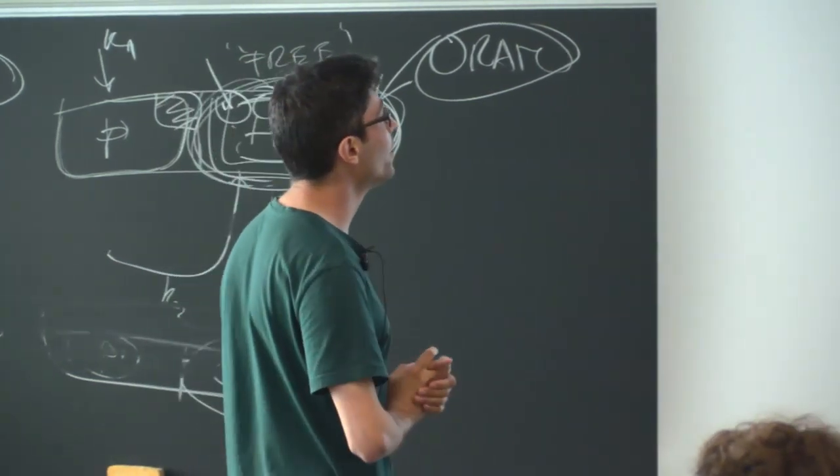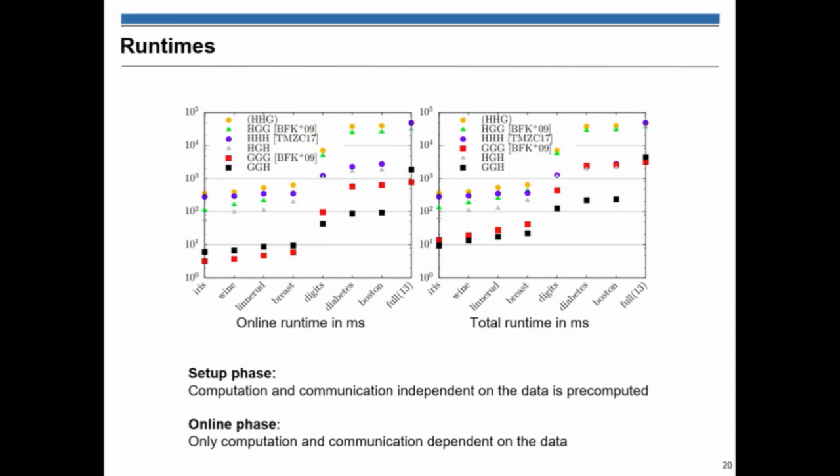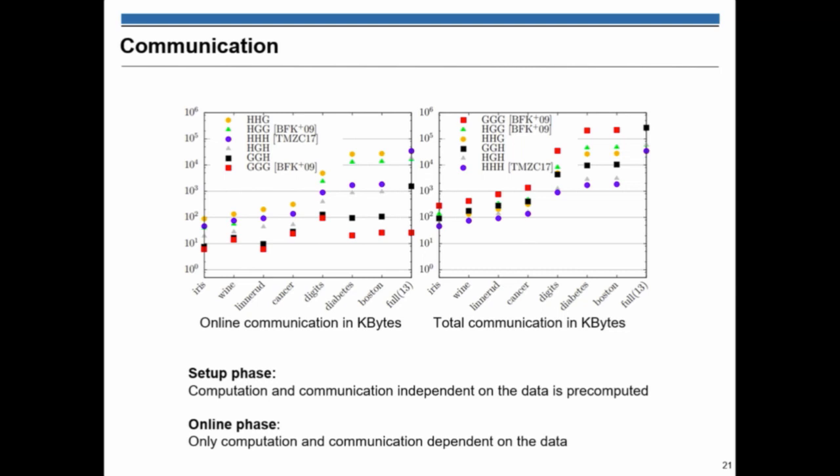If I wanted to give a quick overview of our findings, is that basically the protocol by Tai et al. which is based on completely homomorphic encryption has the lowest communication. But you see that the runtime is still quite medium. But the protocols that we introduced, which combines garbled circuit and homomorphic encryption already shows a better online runtime and also a good total runtime. In terms of communication, the homomorphic encryptions or the work of Tai et al. is the most efficient one.